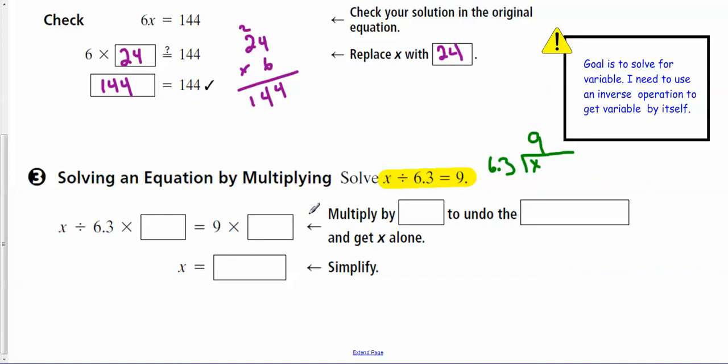that helps me see that if I multiply here, I'll be good to go. So I'm going to multiply both sides by 6.3. So here, if I multiply both sides by 6.3, that's canceling it out. Because that undoes the division.